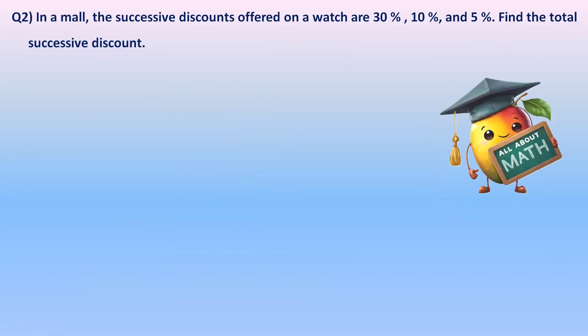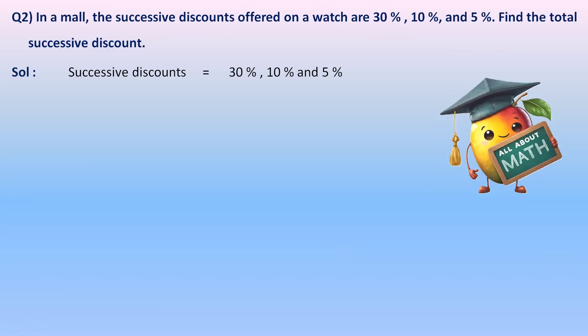Let's do another question. In a mall, the successive discounts offered on a watch are 30 percent, 10 percent, and 5 percent — find the total successive discount. In this case we have three successive discounts, and we can use the same formula a plus b minus ab by 100 for this question too.